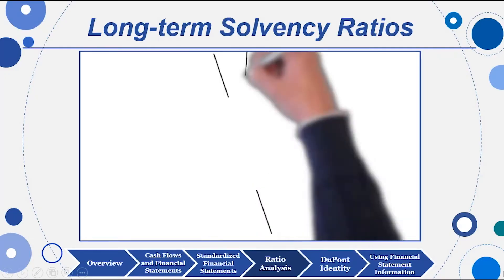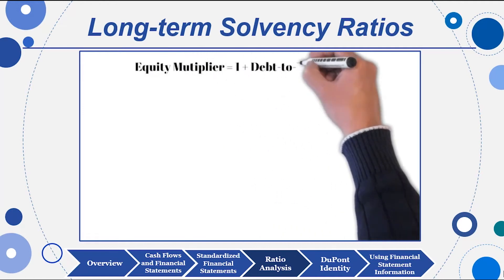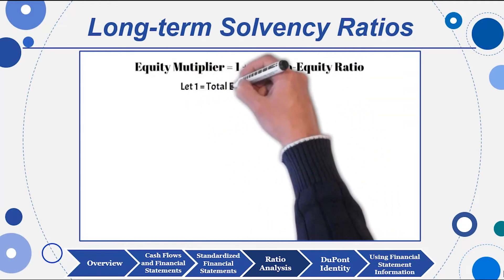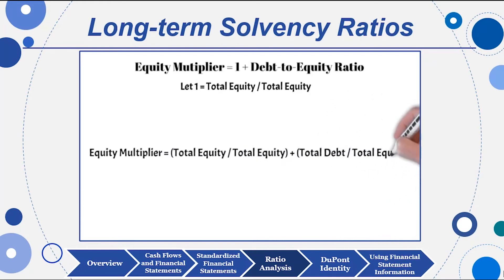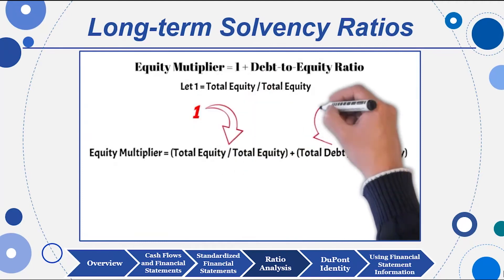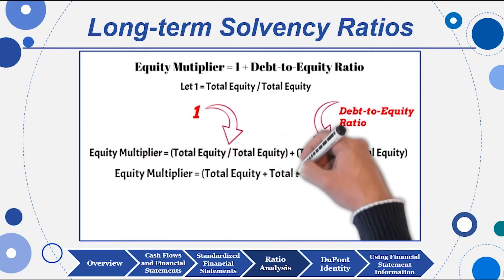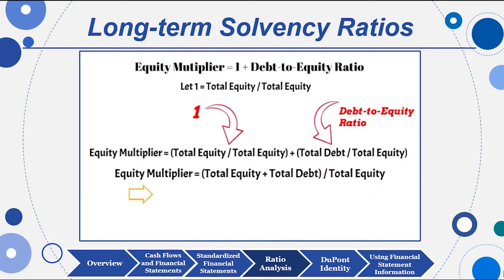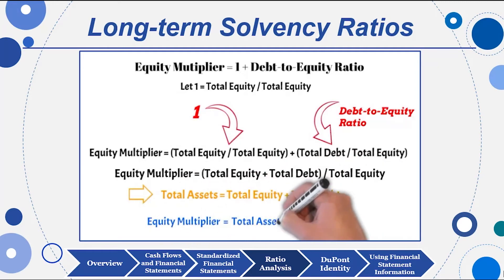Here's the proof for the equity multiplier. The equity multiplier equals assets-to-equity. Breaking that down: equity over equity plus debt over equity gives you one plus debt-to-equity. That's the proof going from assets-to-equity to one plus debt-to-equity. My way of remembering it is one plus debt-to-equity — that's easier than remembering 'equity multiplier' as some obscure name.